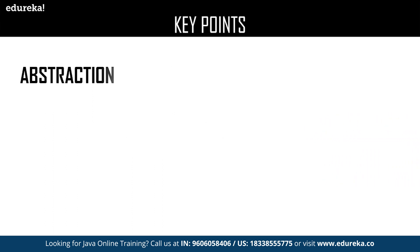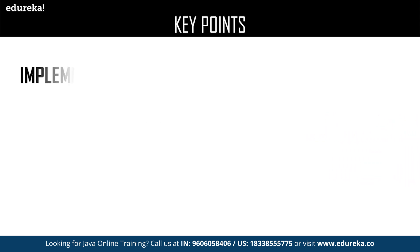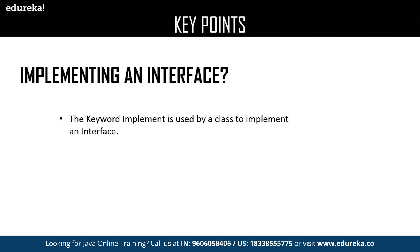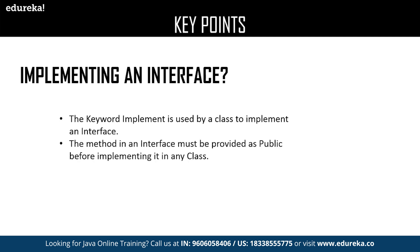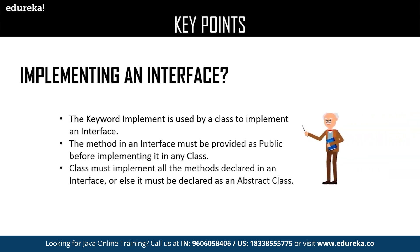The next key point is abstraction. The major advantage of interface is abstraction because none of the methods declared in an interface have a body. The next key point is implementing an interface — the keyword implements is used in a class to implement the methods of an interface. The method in an interface must be provided with a public access modifier. By default, the methods declared in an interface are considered public. A class must implement all the methods declared in an interface, or else it must be declared as an abstract class.